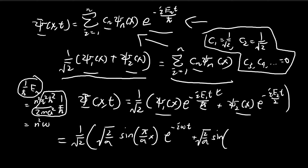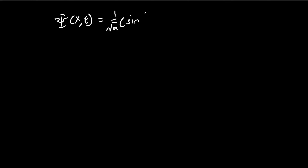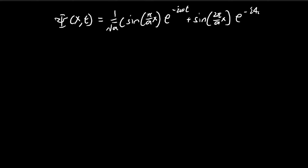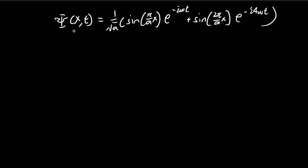Writing this out explicitly: for n=2, we get sine of 2 pi x over a, and since there's an n² in the energy, this gives 4 omega, so the exponent is negative i 4 omega t. The square root of 2 factors cancel out, giving a fairly nice expression for the wave function: sine(pi x/a) e^(−i omega t) plus sine(2 pi x/a) e^(−4i omega t). This is the first part of the answer for part B.